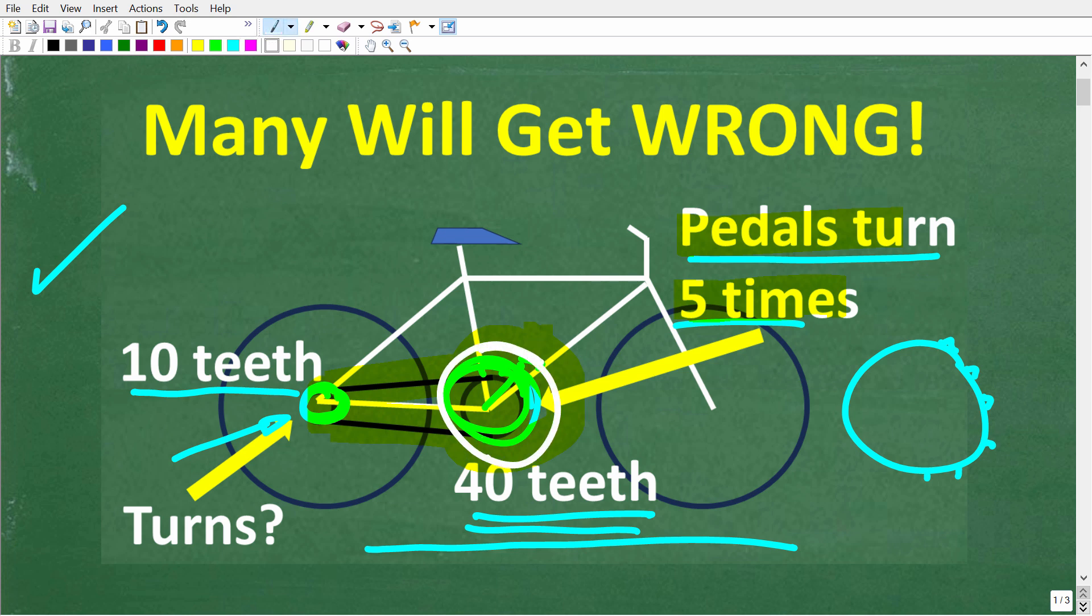So, this big gear, again, has 40 teeth. The small gear has 10 teeth. So, if we do five rotations, pedal this big gear five times, how many times is this small gear going to turn? Let's take a look at the complete solution right now.